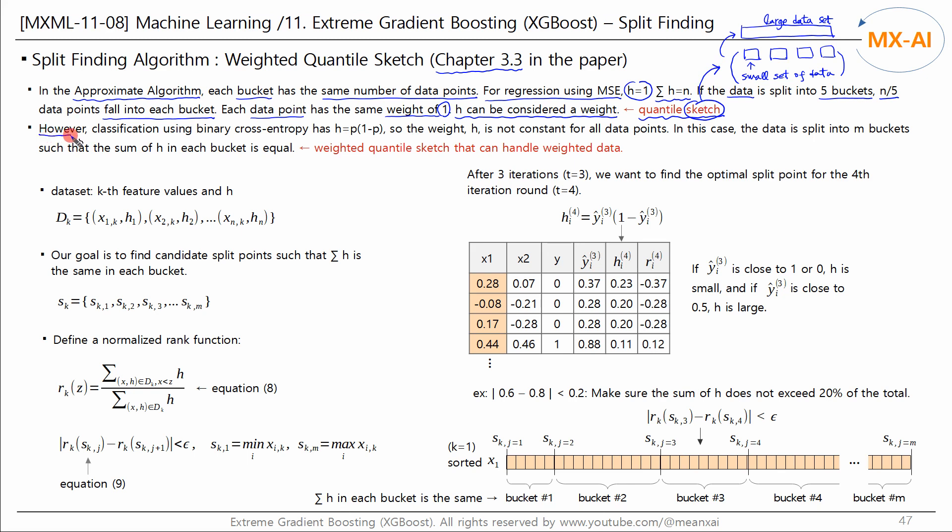For classification, binary cross-entropy is used. So h is not 1, but the value calculated by this formula. Therefore, the weights h are not constant for all data points. In this case, the data is not split into buckets of equal size, but instead is split into buckets where the sum of h is equal or similar.